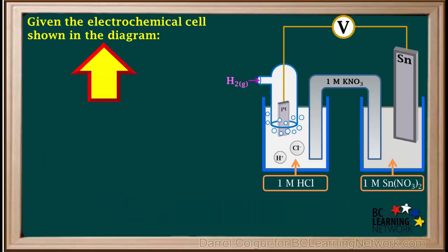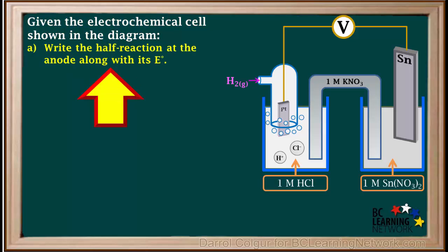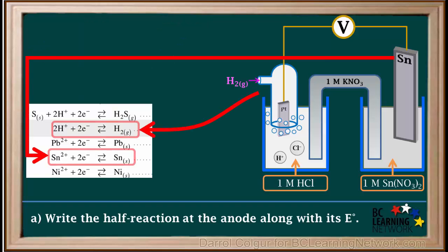Now that we know the half cell on the left is the standard half cell, we'll look at the overall cell and go through a series of questions. The A part of the question asks us to write the half reaction at the anode along with its E° value.